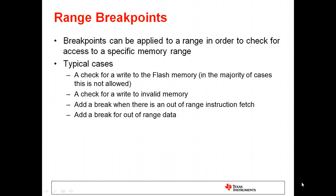Range breakpoints are meant for checking memory. For example, to check whether there was any activity in a specific memory range — either because you want to protect it, or because you want to trap when code goes somewhere unexpected. If you know your code is within a specific memory range, you can use a range breakpoint to see whether your code ever goes outside of that range and goes off into the weeds. Typical cases include instruction fetches and looking for invalid memory.